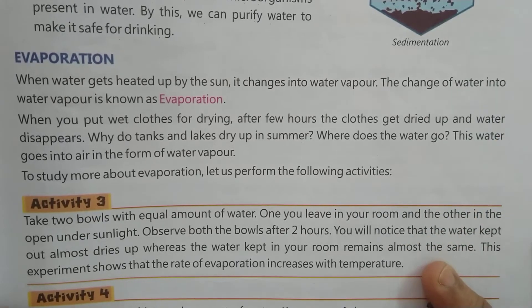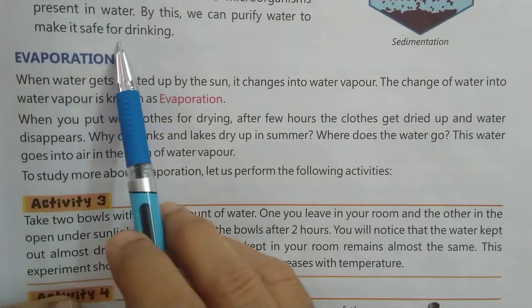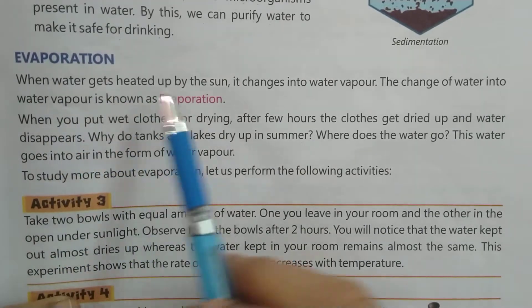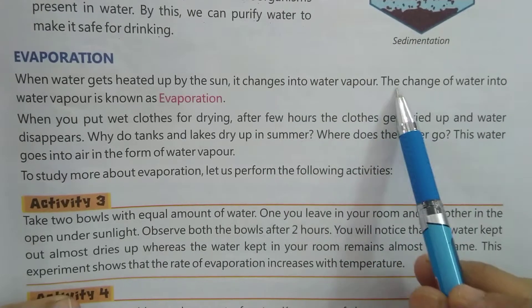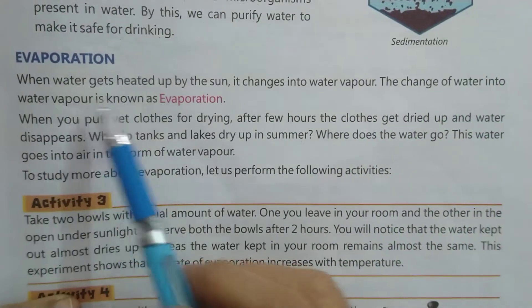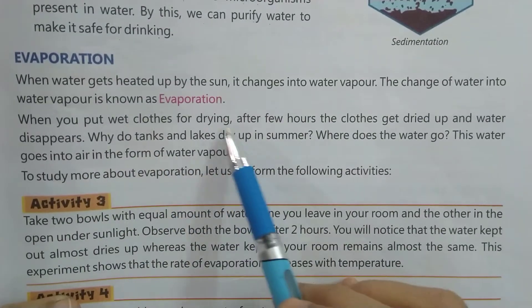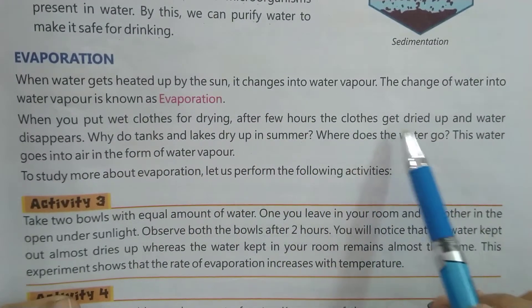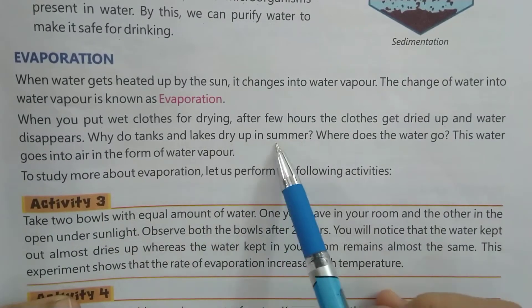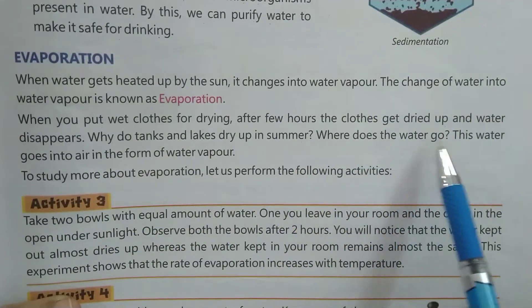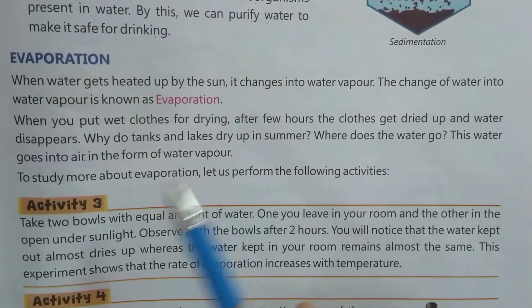Good morning children. Let's continue the chapter — our topic is evaporation. When water gets heated up by the sun, it changes into water vapor. This change of water into water vapor is known as evaporation. When you put wet clothes for drying, after a few hours the clothes get dried up and the water disappears. Why do tanks and lakes dry up in summer? This water goes into the air in the form of water vapor.